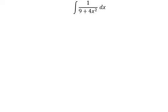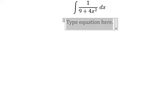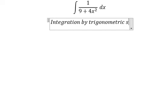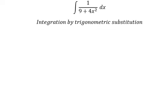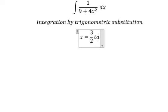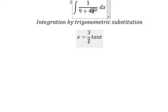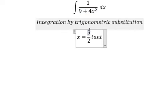Hello everybody, so today I want to show you how to answer an integral by trigonometric substitution. I will put s equals to (3/2)t, because if I put this in here, we have (9/4)t² — the fours cancel, the nines cancel — and we can do factorization: 1 plus tan²t, which we change for sec²t.